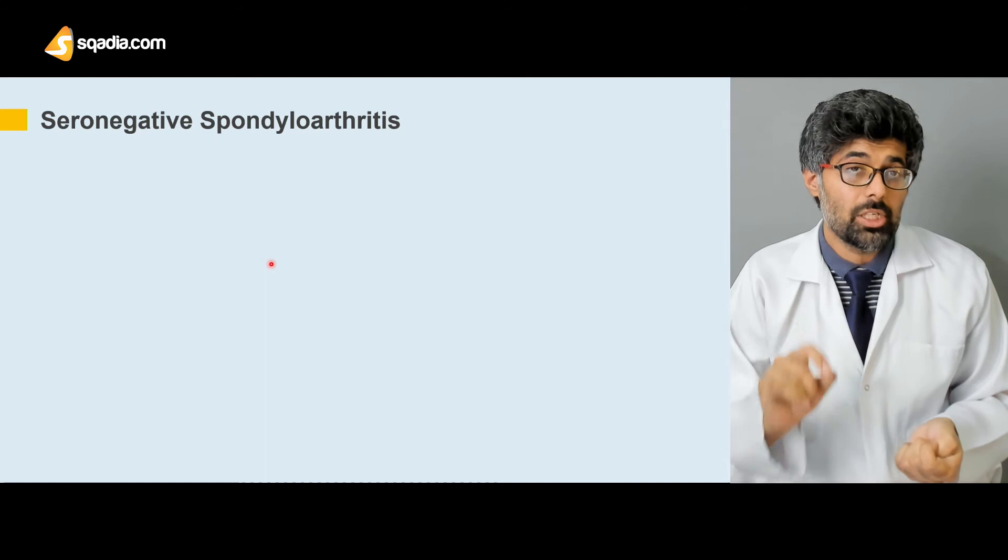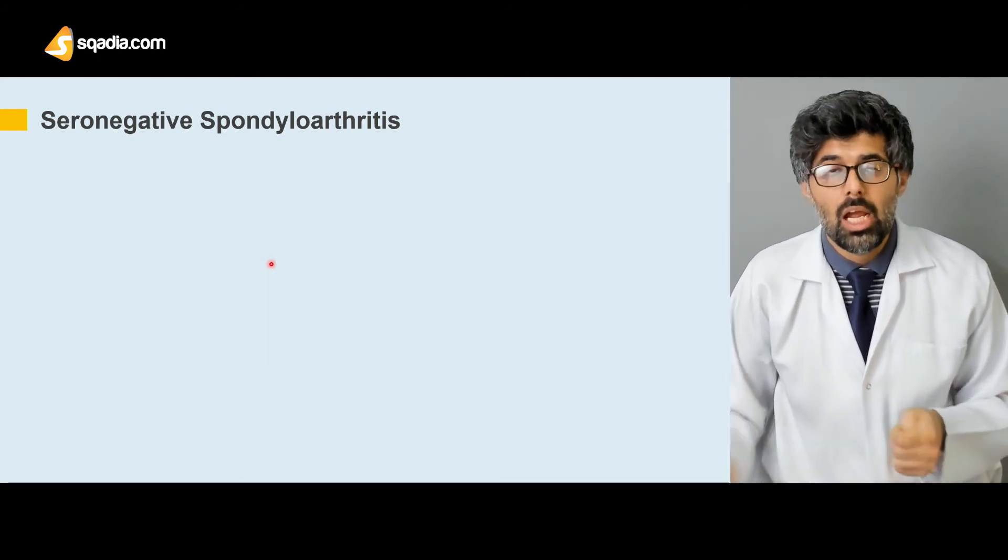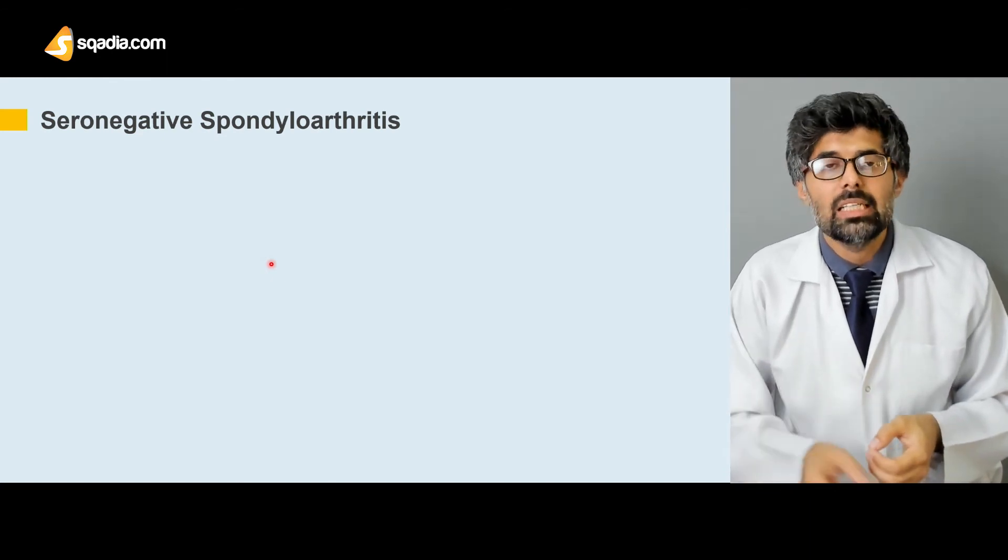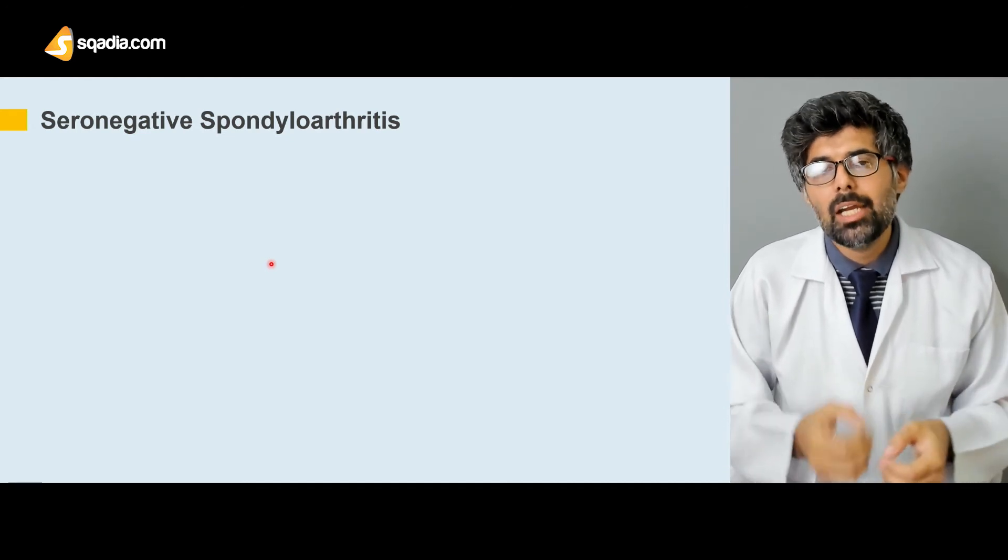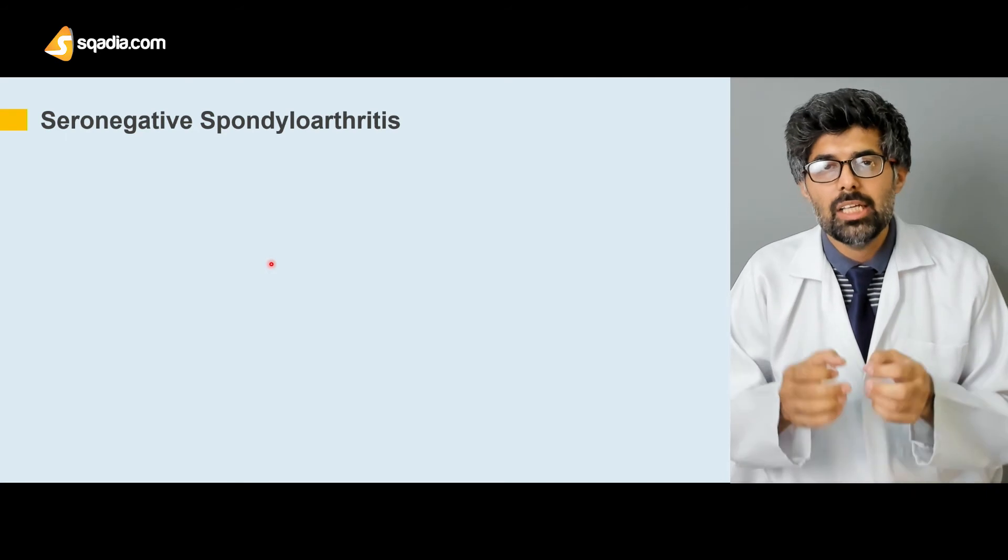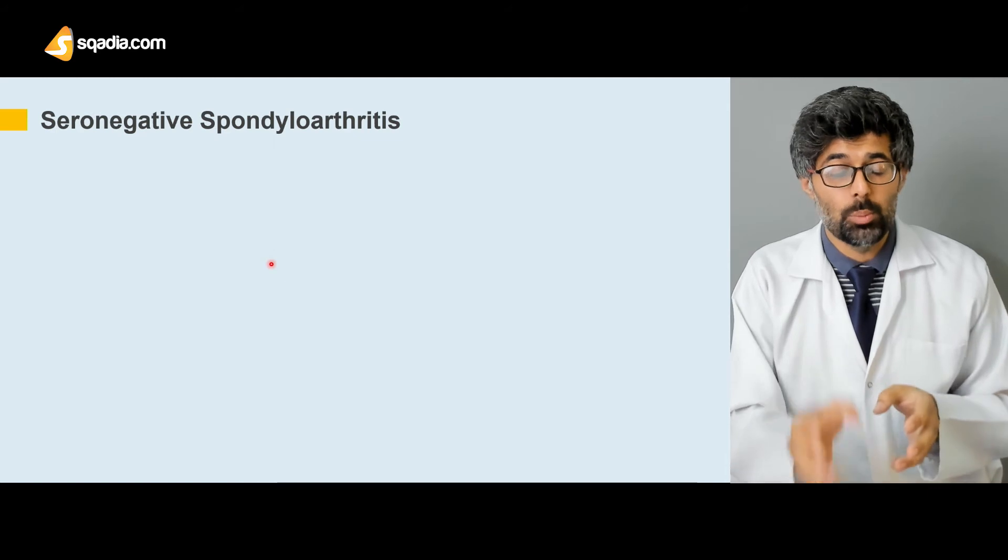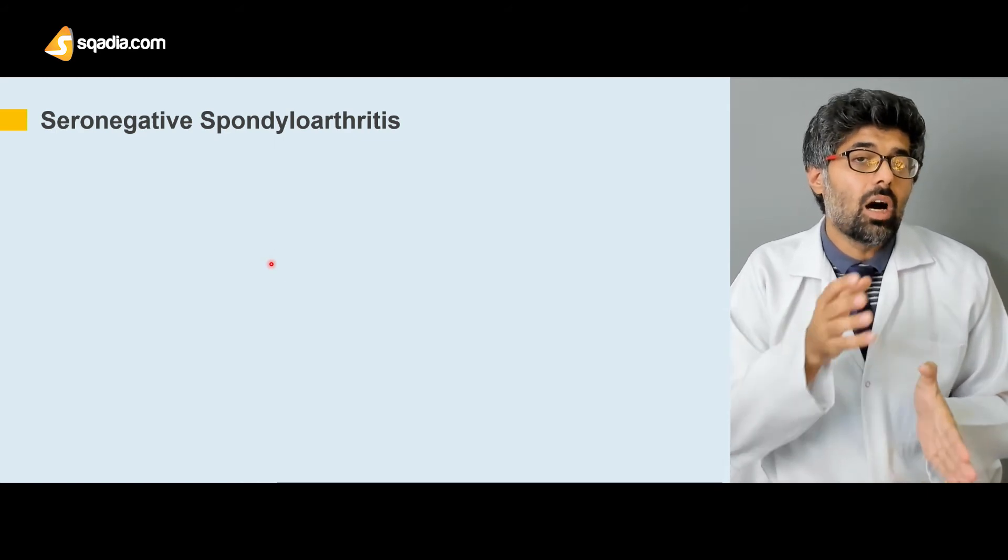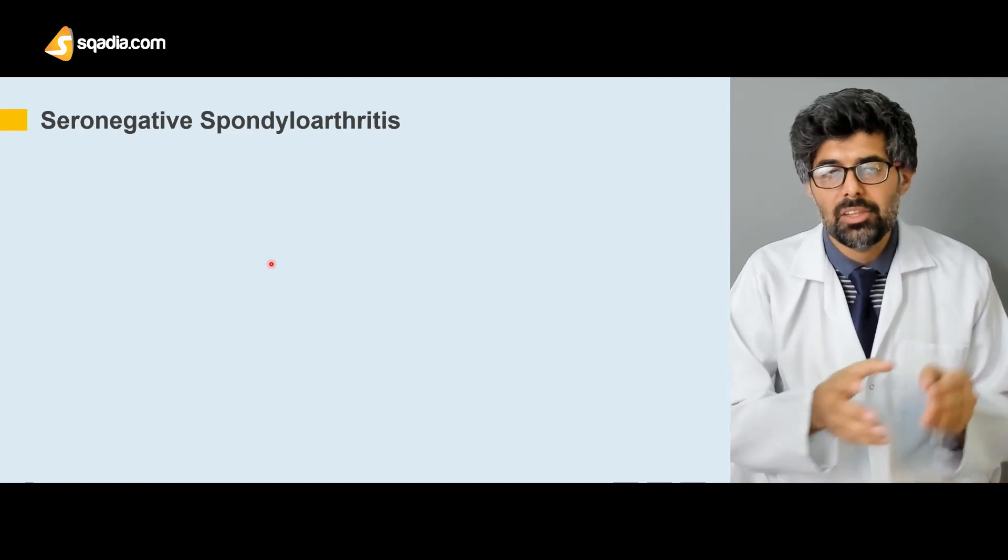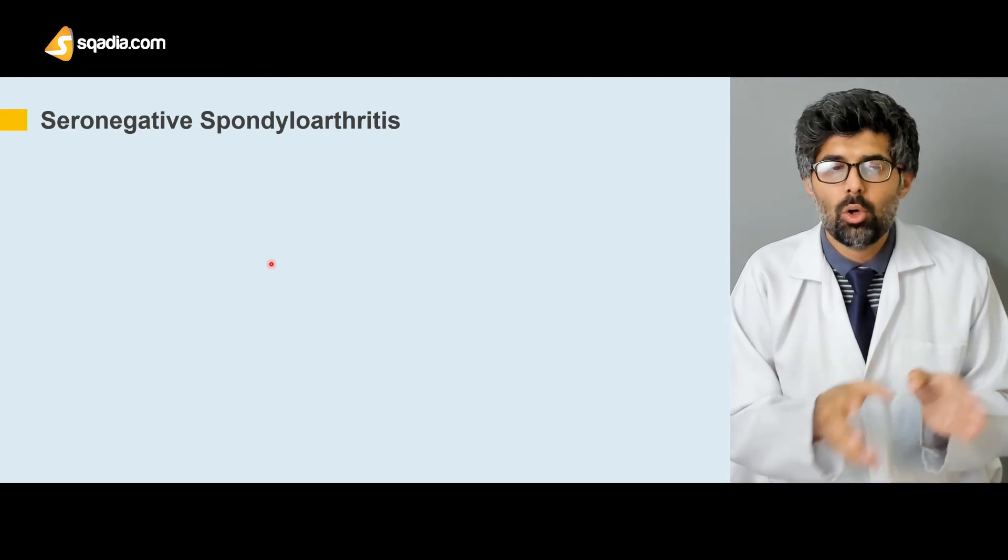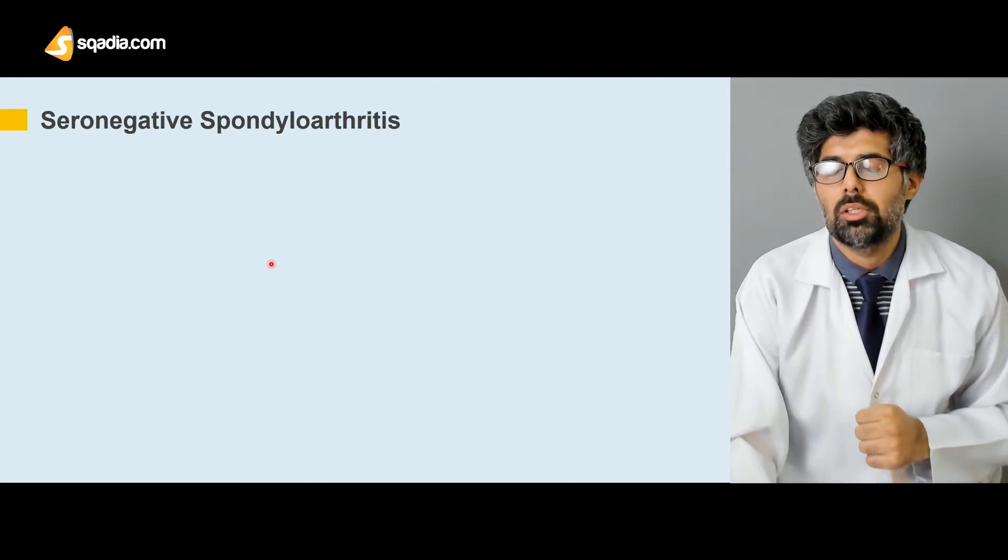It does not have any kind of citrullinated peptides which are again present in rheumatoid arthritis. The most common citrullinated peptide is the CCP or the cyclic citrullinated peptide, or any antibody against this peptide, which is very common in rheumatoid arthritis. But both of these, the rheumatoid factor and the anti-CCP, are not found in the seronegative spondyloarthritis, and this lecture is solely on the seronegative spondyloarthritis.